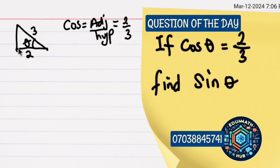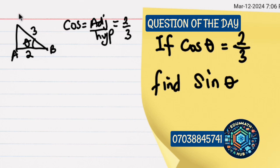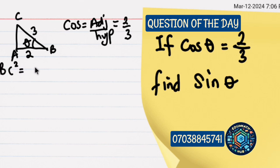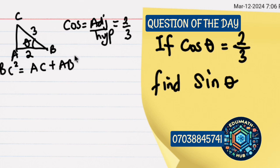What is left is to find the opposite side, and you can easily get this using the Pythagorean theorem. Let's label this triangle ABC. By Pythagoras theorem, BC squared is equals to AC squared plus AB squared.